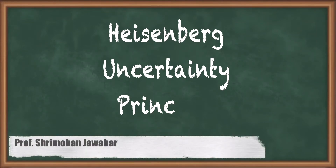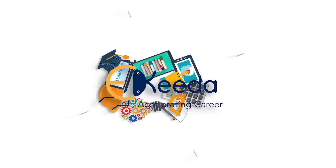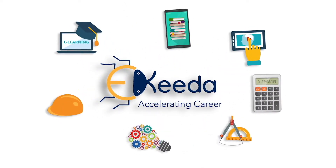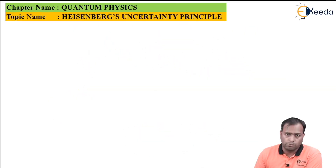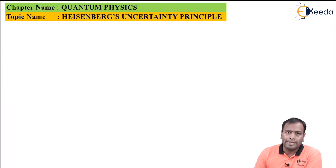Hello friends. In previous classes we studied about de Broglie's hypothesis, and in earlier classes we also studied about atomic structures — Thomson's model, Dalton's model, Rutherford's model, and finally the Bohr's model — but unfortunately none of them were able to predict the actual position of the electron.